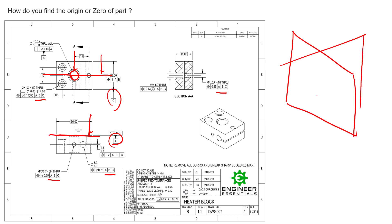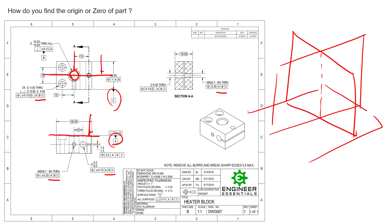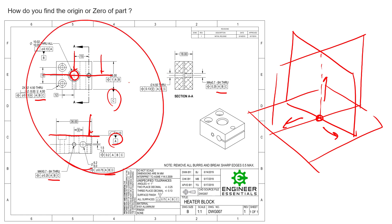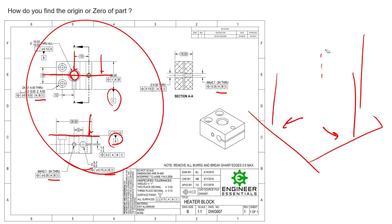If we picture three mutually orthogonal planes — two intersecting here and one down here — that creates the last zero right at this point. We can picture X positive, Y positive, and Z positive. Those datum features create this datum reference frame that sets the zero-zero-zero for this part.